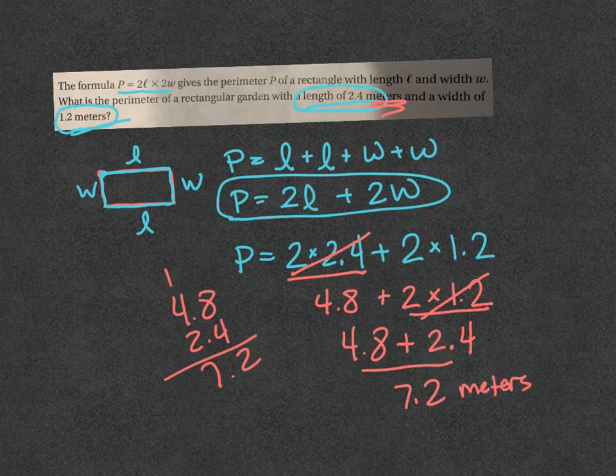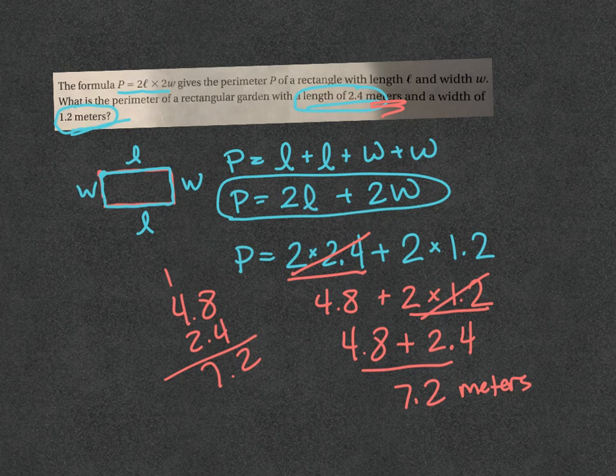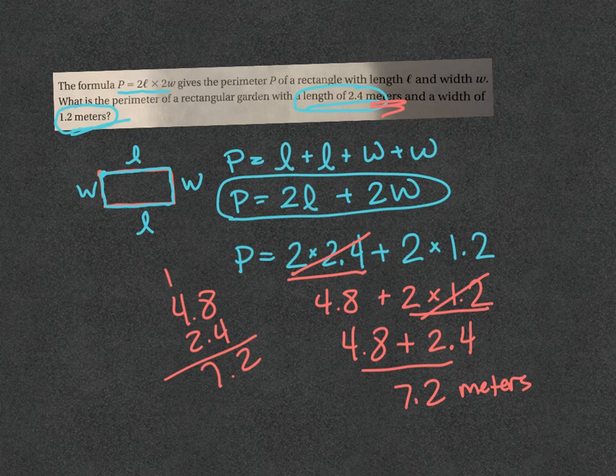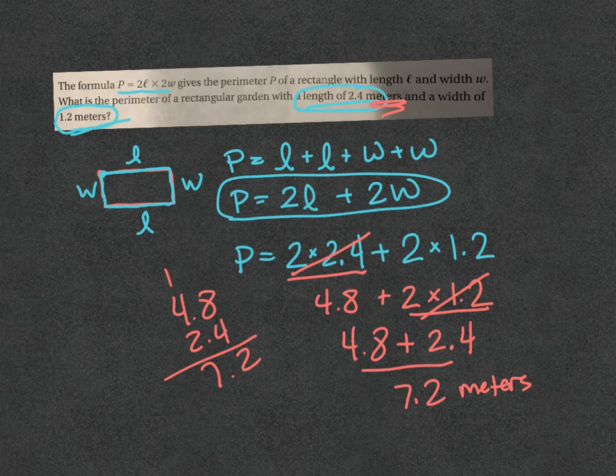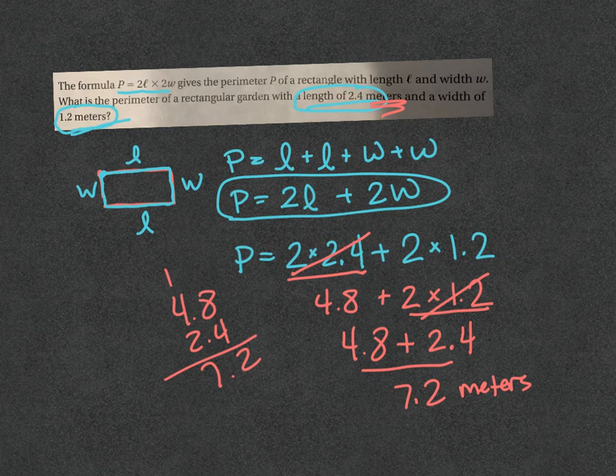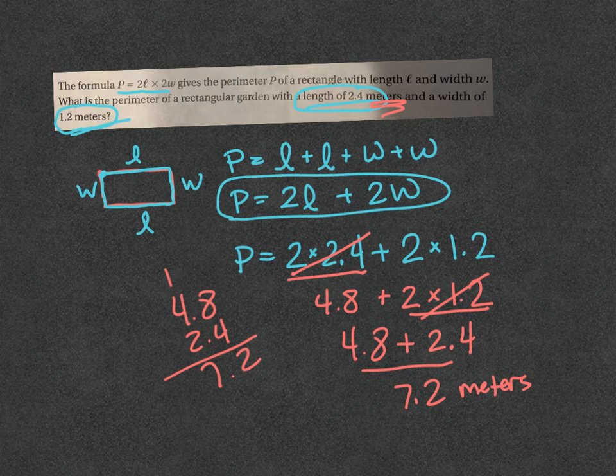So they gave you the formula to plug the numbers into. I showed you how they got that formula so you understood what it means. Then they gave us the information - the length, 2.4, and the width, 1.2 - and we plugged them in. That's how you do that. Hopefully everything made clear sense and you're ready to go. Good luck.